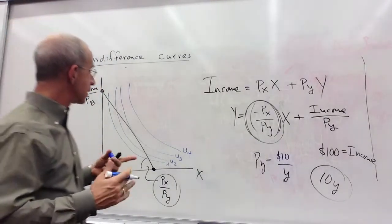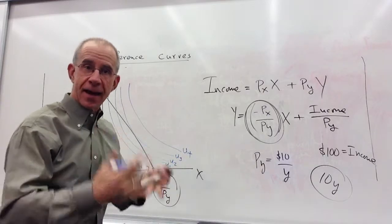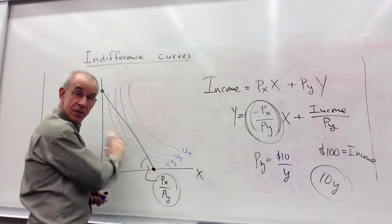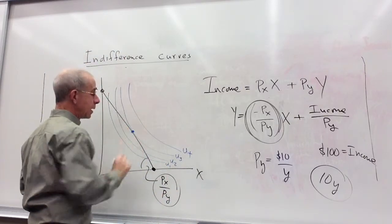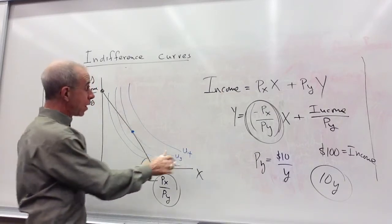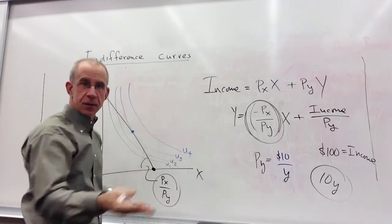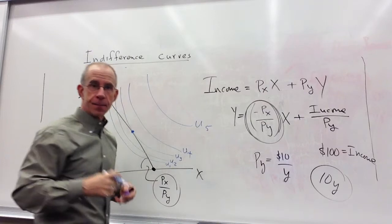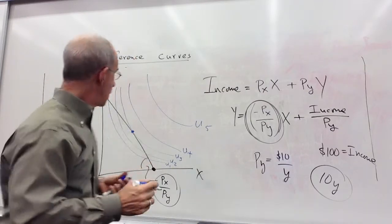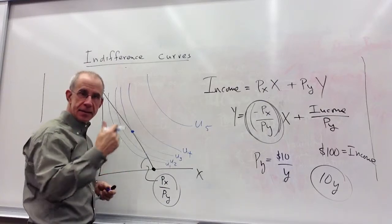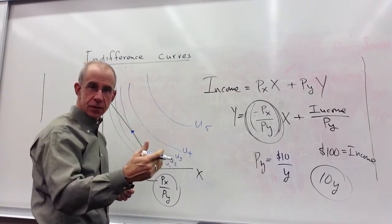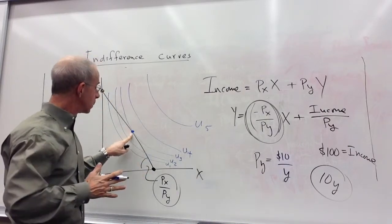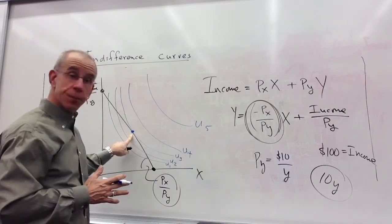The highest level of satisfaction, the highest utility that the consumer can reach given this budget constraint is this point right here. You might want to get up here to U4, you might be thrilled to have that level of utility, but you can't afford it. This tangency reflects the highest level of consumption that is consistent with your budget constraint.